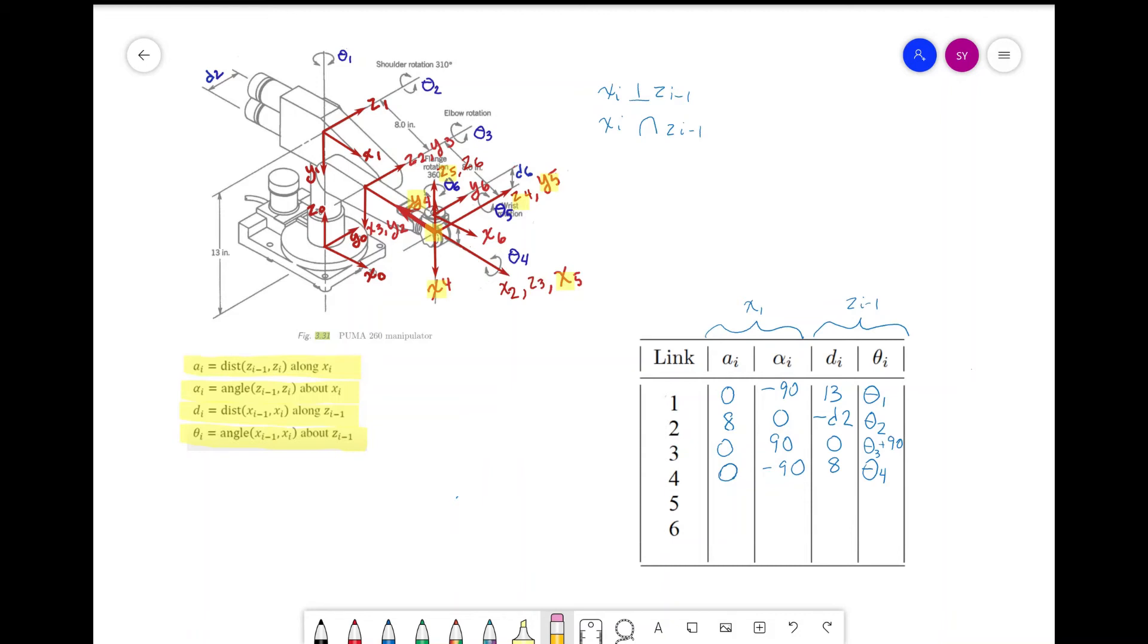Now let's look at link 5. We can see that frame 5 and frame 4 share the same origin, so we know that a is 0. Now let's look at z4 and z5 to find alpha. Z5 is like this, z4 is like this, and x5 is this way. Positive rotation would be this way, and we need to go this way. So alpha is 90 degrees, positive 90 degrees. D is 0.